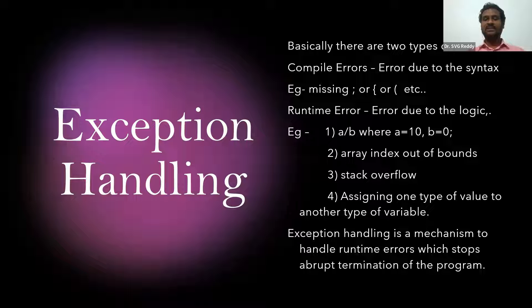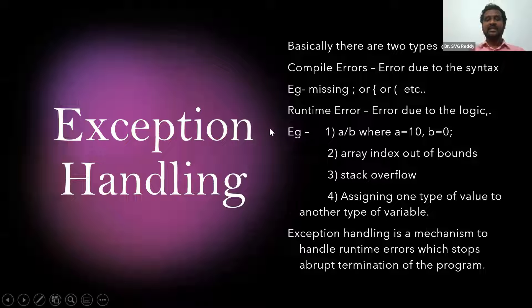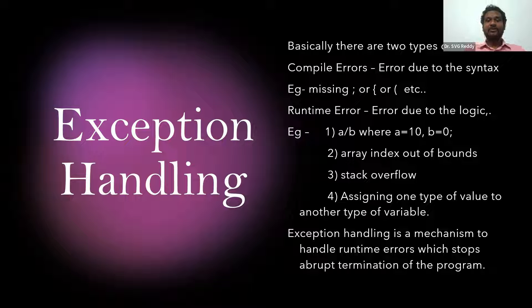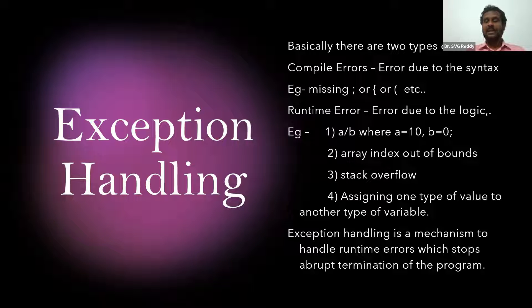That's something about compile errors, but runtime errors — you can see on the slide here — for example, one divided by zero is infinity, which is not defined in the computer. If the processor gets a value divided by zero, it is not defined for the processor, and the processor cannot understand what to do there. That's an exception.